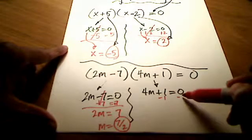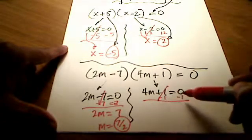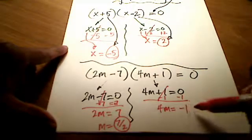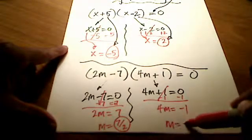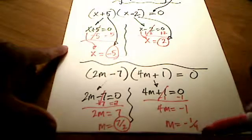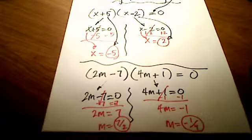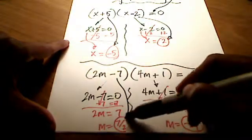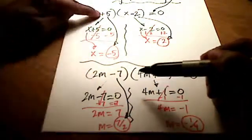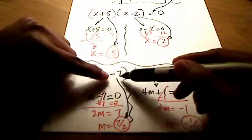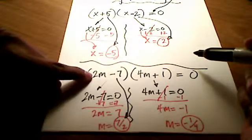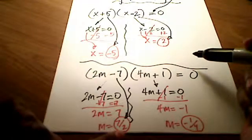Likewise for this one, I would start by subtracting 1 on both sides. I've got 4m now is equal to negative 1, and dividing both sides by 4, I would get m is equal to negative 1 fourth. Do you see a shortcut that we can use to go from each of these original parentheses into my answers here? Do you see that I did change that negative 7 into a positive 7? Just like we changed that positive 5 into a negative 5, we're going to change the sign of this last term.